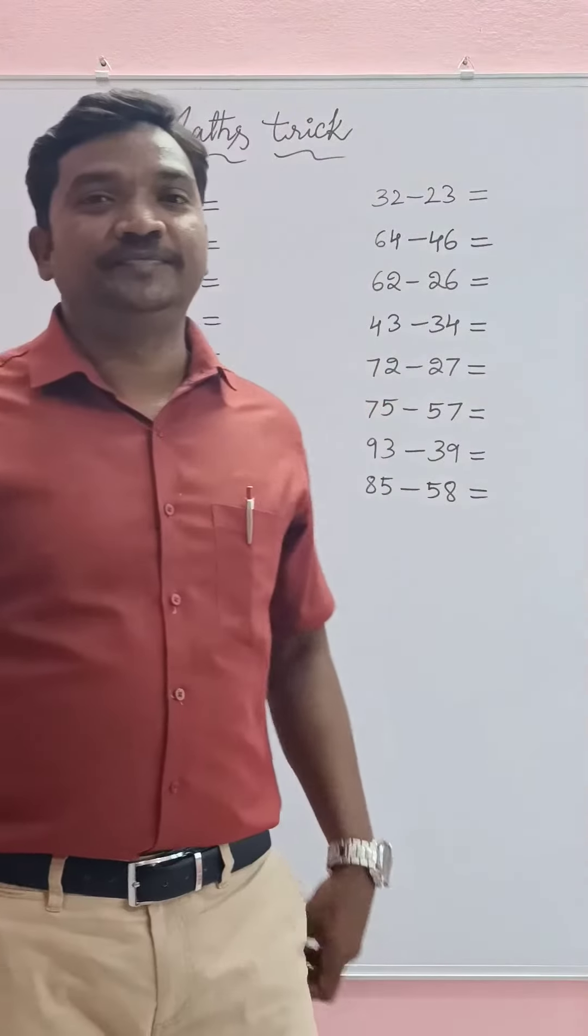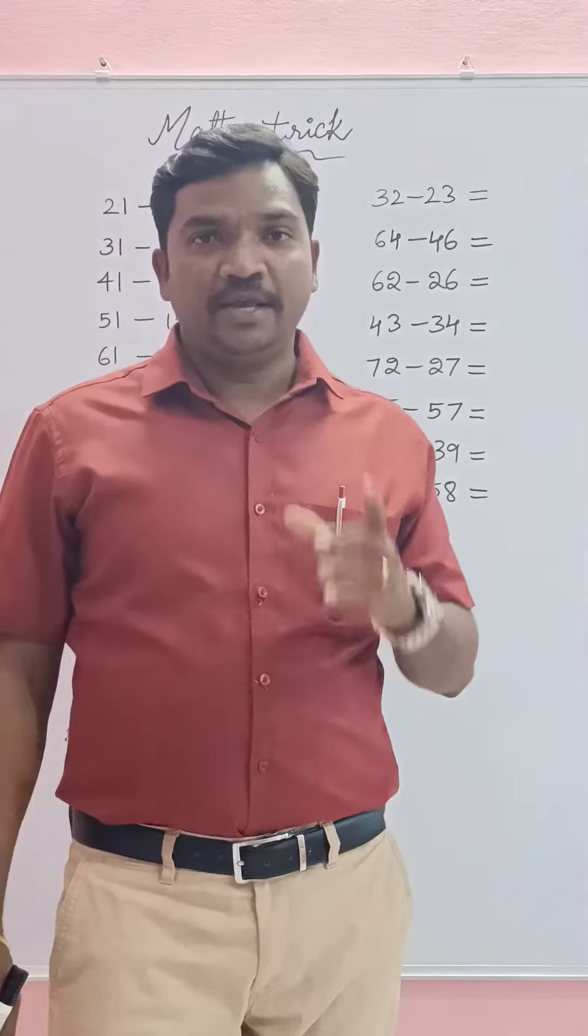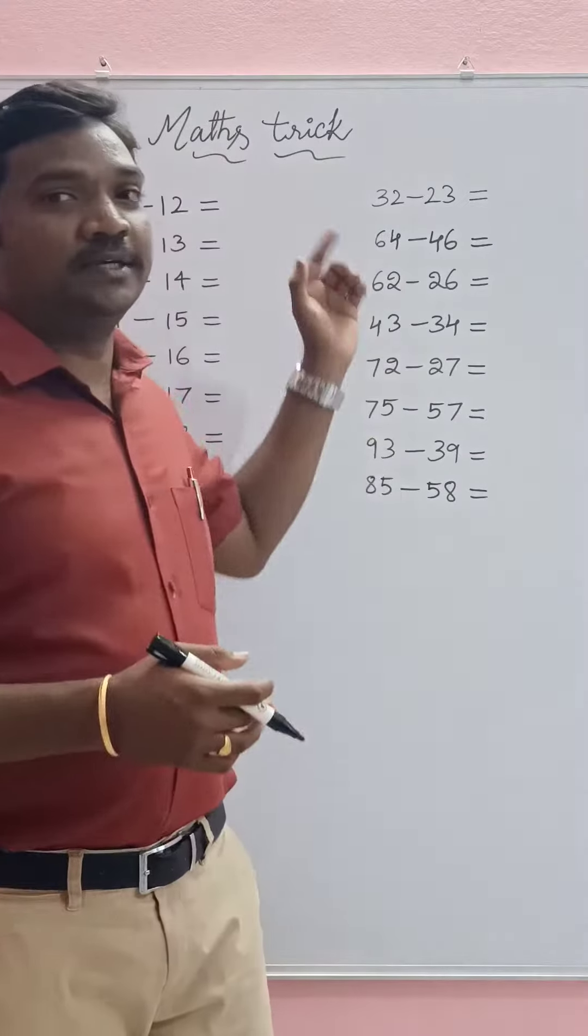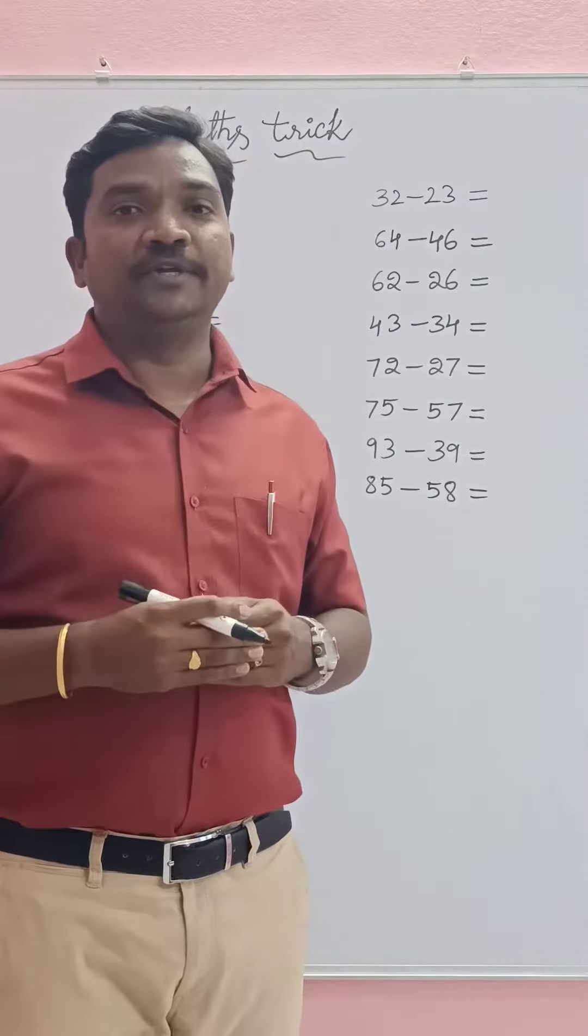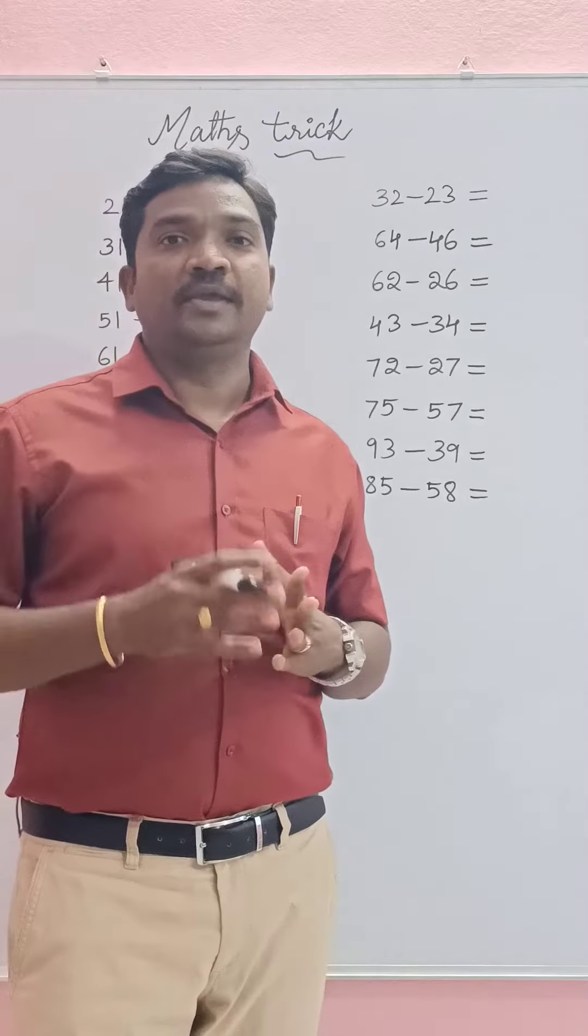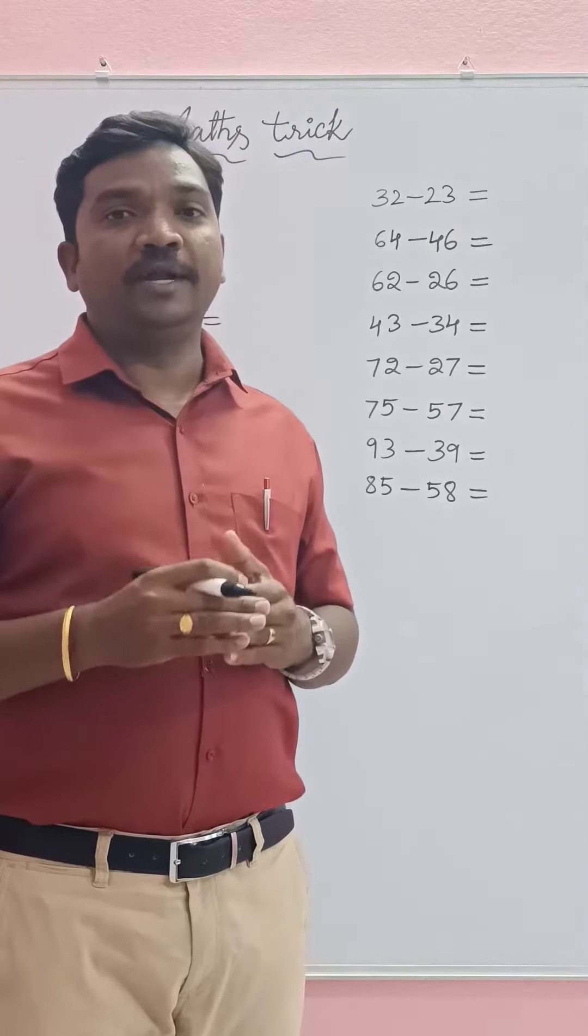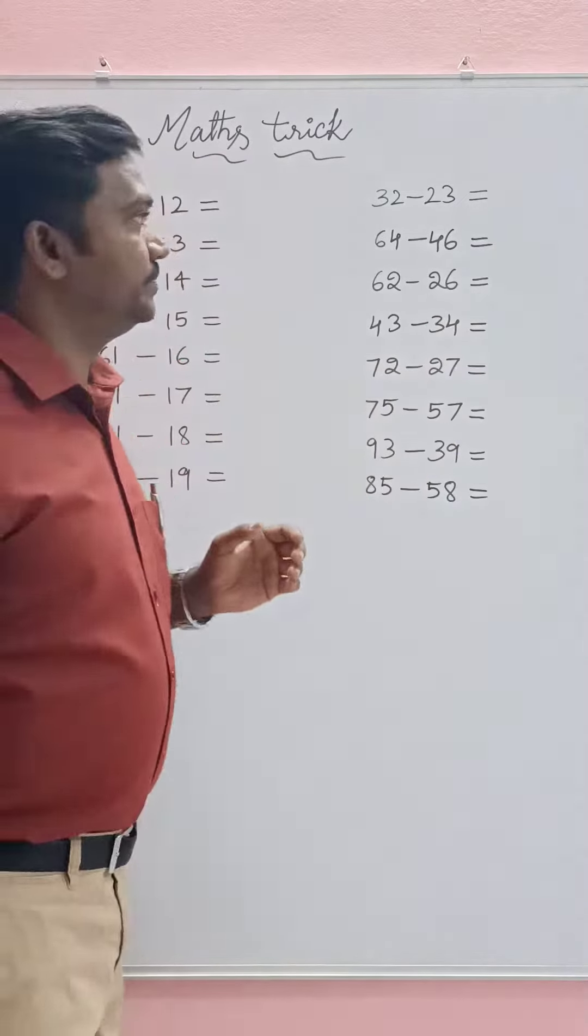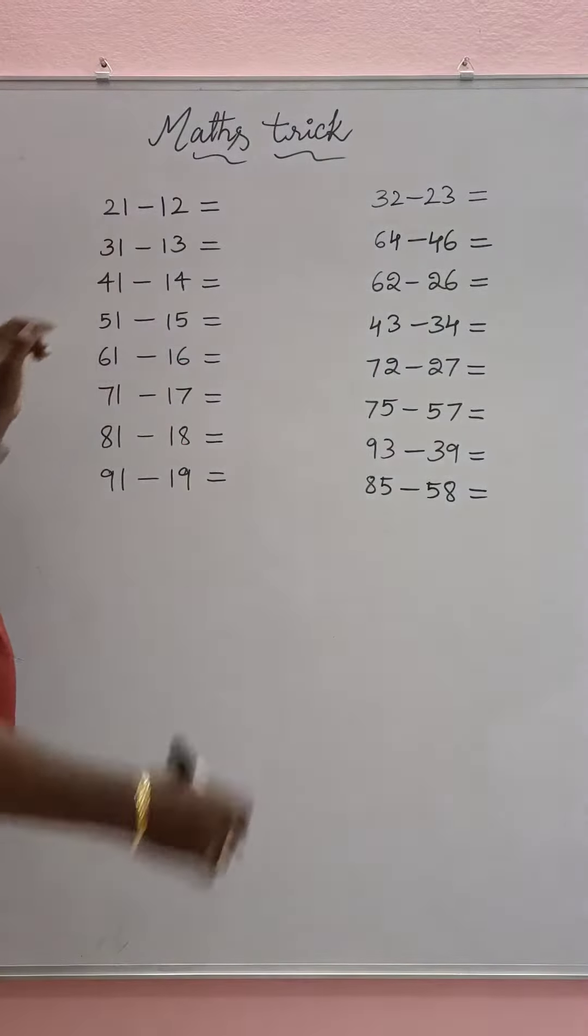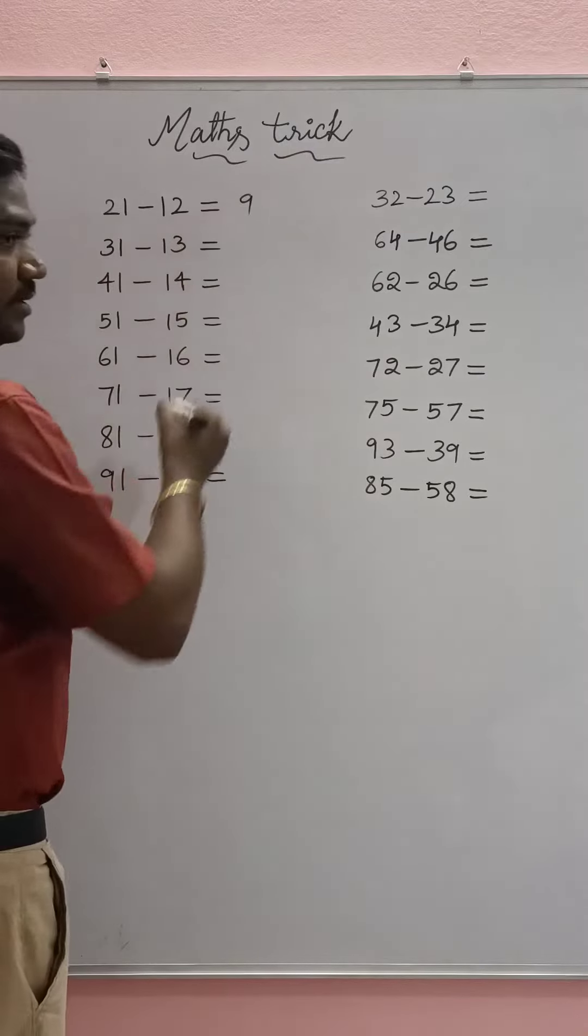Hi everyone, today I will tell you a math trick and that is how to find the difference between a two-digit number and the number obtained by interchanging the digits. Let us see some examples: 21 minus 12 equals 9.